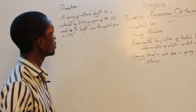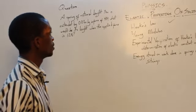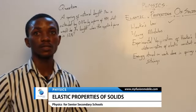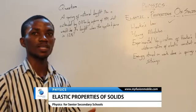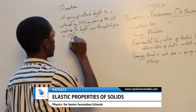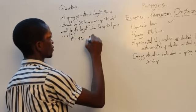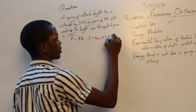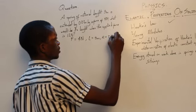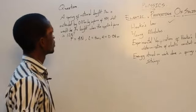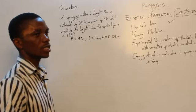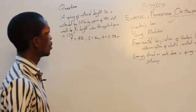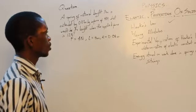Let's take a question on springs. A spring of natural length 3 metres is extended by 0.01 metres by a force of 4 newtons. What would be its length when the applied force is 12 newtons? We write out our parameters: force F is 4 newtons, length is 3 metres, and the extension experienced is 0.01 metres. From this we can calculate the relationship between force and extension using Hooke's Law.